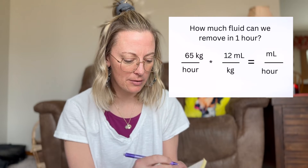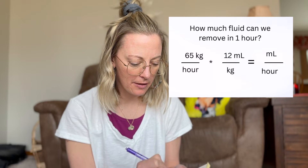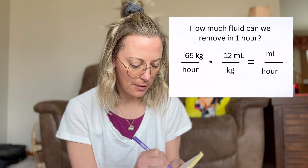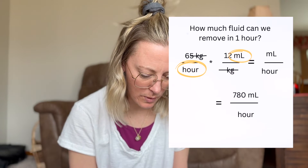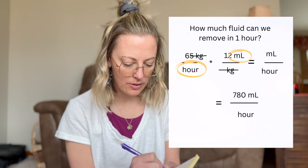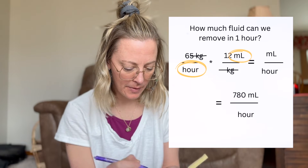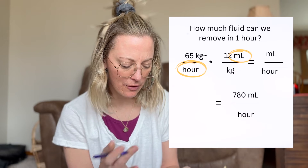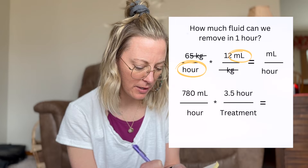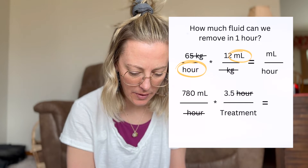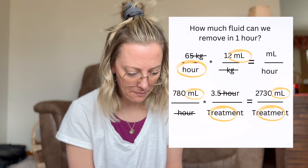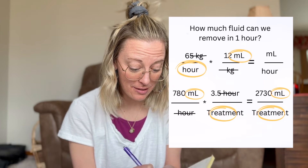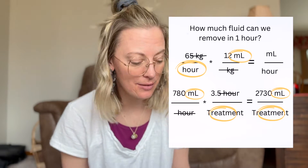We're looking for mils. Let's start with mils per hour — how many mils can we remove per hour? I'm going to match up the mils: 12 mils per one hour times 65 kilograms. So 12 times 65 equals 780 mils per hour. Then multiply that by 3.5 — that gives us 2,730. So I thought I could easily remove three liters from somebody weighing 65 kilograms, but it turns out the maximum amount of fluid I can remove is 2,730 mils.